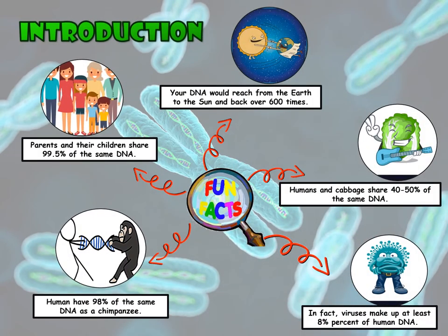For the introduction part, I would like to share five fun facts about Nucleic Acid that many of us didn't know. First, parents and their children share 99.5% of the same DNA. Second, your DNA would reach from the Earth to the Sun and back over 600 times. Third, humans have 98% of the same DNA as a chimpanzee. Fourth, humans and cabbage share about 40-50% of the same DNA. And in fact, viruses make up at least 8% of human DNA.